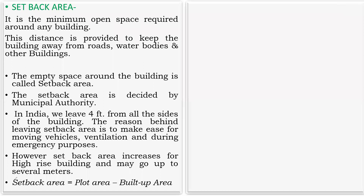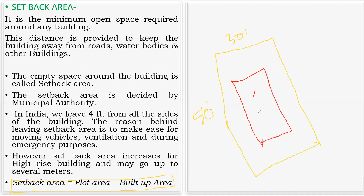The setback area equals the plot area minus the built-up area. For example, if I have a 30 feet by 50 feet plot and construct a house somewhere in the middle, the space left from the plot boundary to the built-up area on all sides — front, back, and both sides — is my setback area.